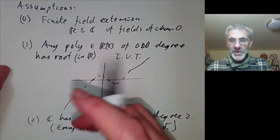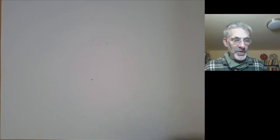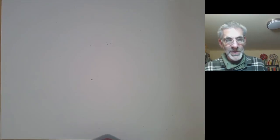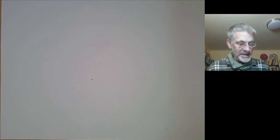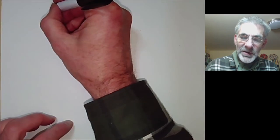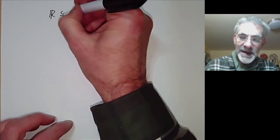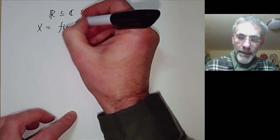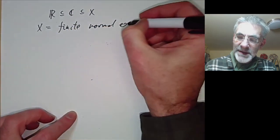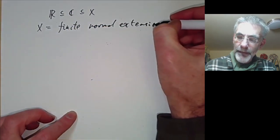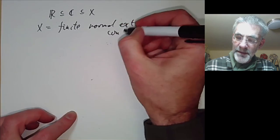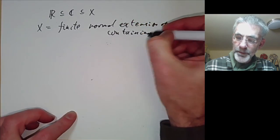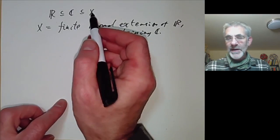What we're going to do is just use these two assumptions and from now on the proof will be purely algebraic. The analysis we use is just the intermediate value theorem, which is really a very mild piece of analysis. So what we do is we look at R contains C and contain X and we're going to take X to be any finite normal extension of R containing C.